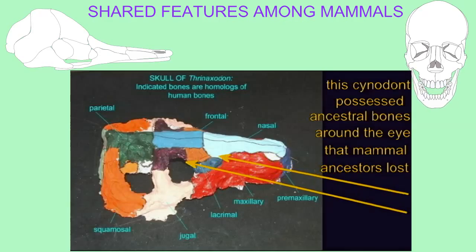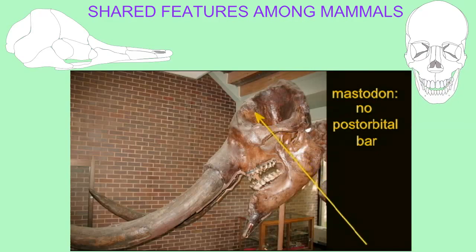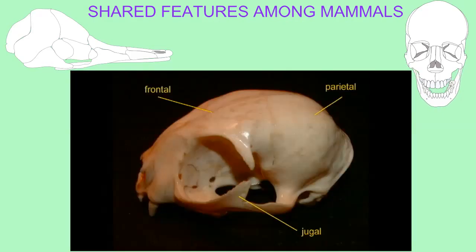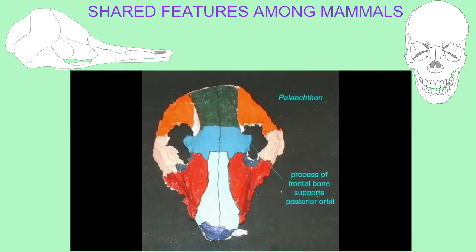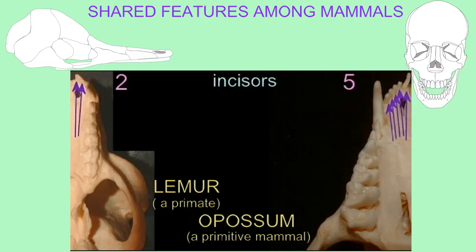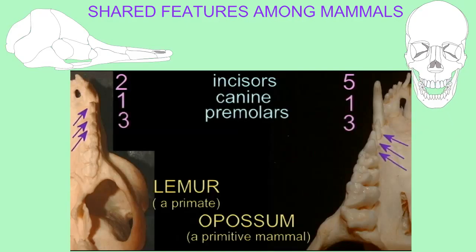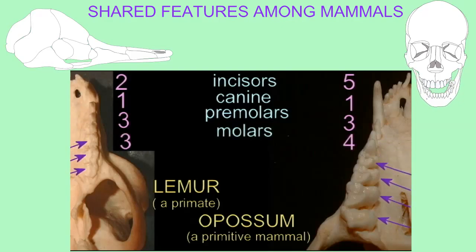The post-orbital bar behind the eye was lost. The lacrimal bone was short. The teeth were modified so that there were different kinds of teeth: tearing incisors and canines, and then grinding cheek teeth as premolars and molars. The teeth allowed occlusion with their matching surfaces, and teeth were only replaced once over the course of a lifetime.